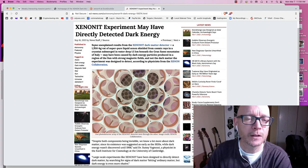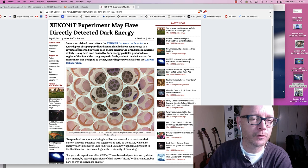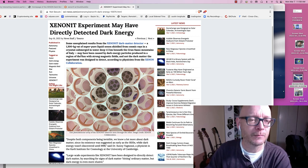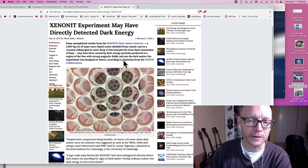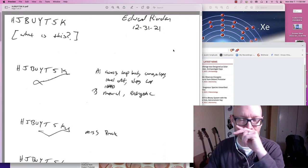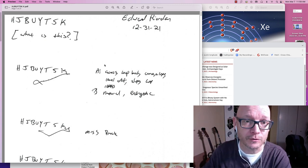Here they wrote in September of 2021 that once they started looking at some of the results, they found stuff. They found something. They think it might be dark energy. Not dark matter, but dark energy. Some unexplained results from the Xenon1T dark matter detector. A 1,300-kilogram vat of super-pure liquid xenon shielded from cosmic rays in a cryostat submerged in water deep 1.5 kilometers beneath the Grand Sasso Mountains of Italy may have been caused by dark energy particles produced by a region of the sun with strong magnetic fields and not the dark matter the experiment was designed to detect according to a physicist from the Xenon collaboration.